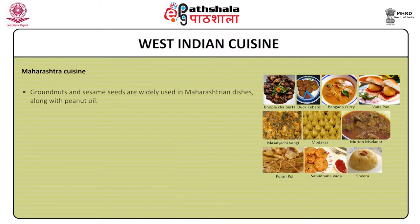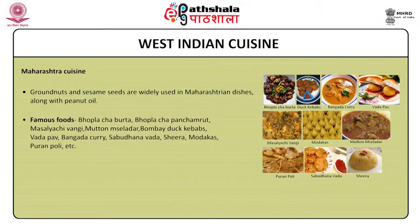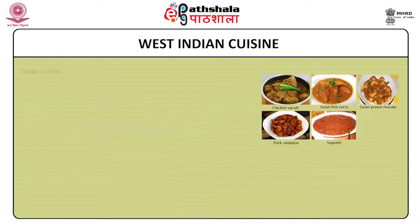Maharashtra cuisine. Groundnut seeds are widely used in Maharashtrian dishes along with peanut oil. The Maharashtrian curries usually have a thin gravy using tamarind for sourness and also add coconut. The popular dishes of Maharashtra cuisine include gopala chha butta, gopala chha panchamrit, masalyachi vangi, vada pav, vangada curry, sabudana vada, sheera, modak, puran poli etc. Goan cuisine: fish is widely eaten. The Goan food is spicy and sour. Kokum, a sour fruit, is widely used in dishes. Some popular Goan dishes are Goan prawn masala, pork vindaloo, Goan fish curry, chicken xacuti etc.